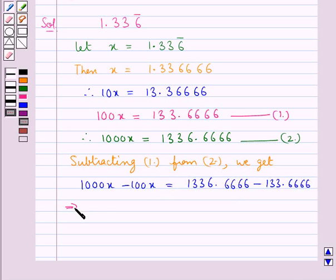This gives us 900x is equal to 1203. And from here we get x is equal to 1203 upon 900.